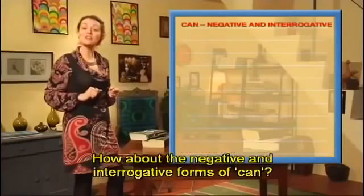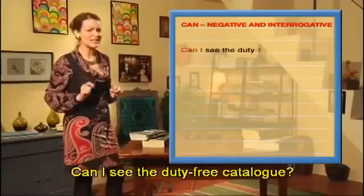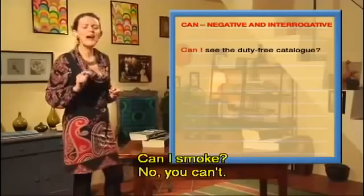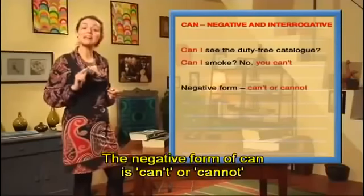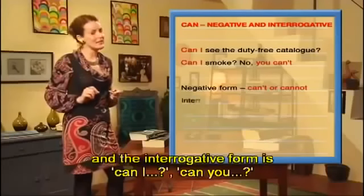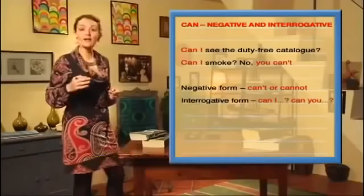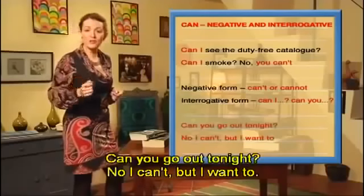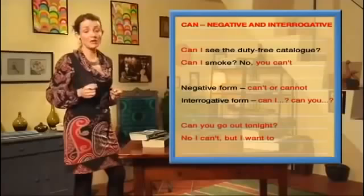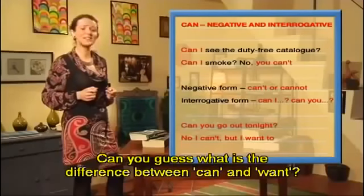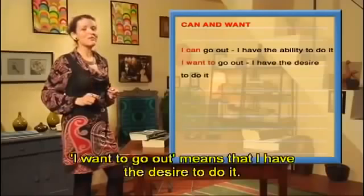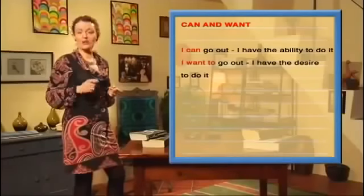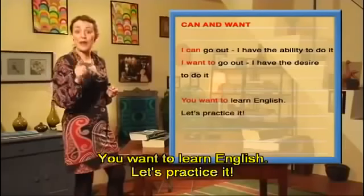How about the negative and interrogative forms of can? Can I see the duty-free catalogue? Can I smoke? No, you can't. The negative form of can is can't or cannot. The interrogative form is can I, can you — can you go out tonight? No, I can't, but I want to. Can you guess what is the difference between can and want? I can go out means I have the ability to do it. I want to go out means that I have the desire to do it.